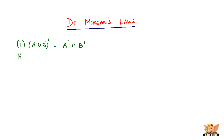Now, what De Morgan's second law says is that it's just the reverse of the first one. It's nothing but the complement of the intersection of two sets A and B equals the union of the complements of those two sets.